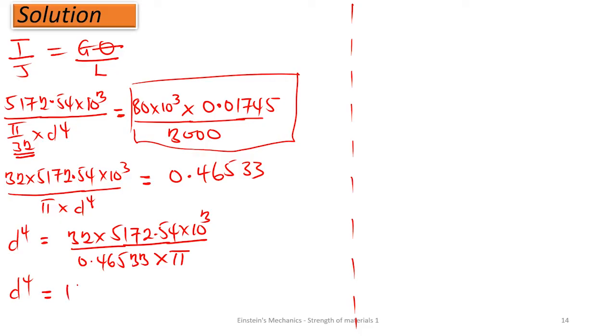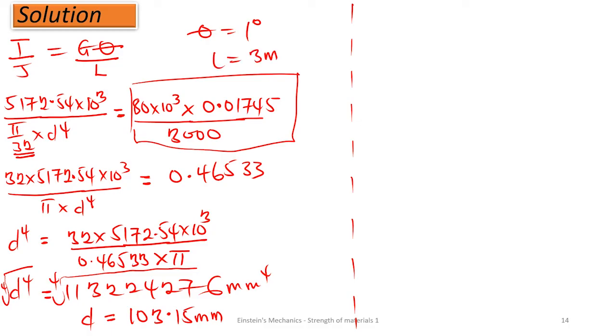d⁴ gives me 113224276. I have to find the fourth root of both sides. This is millimeters to the fourth. The fourth root gives me diameter D equals 103.15 mm. So if we obey the instruction that the bar is not allowed to twist more than 1 degree in length 3 meters, the suitable diameter is 103.15 mm.